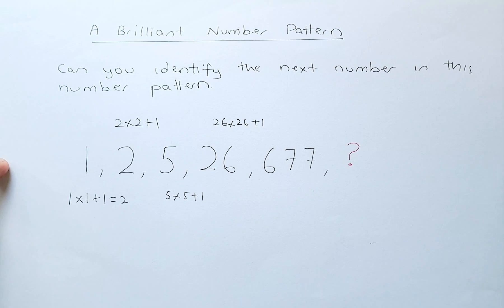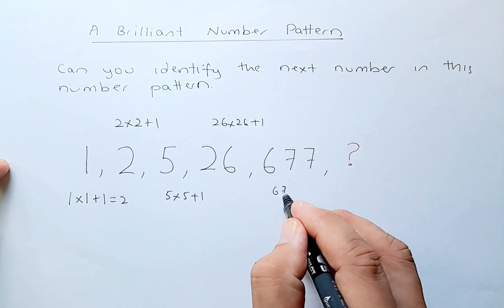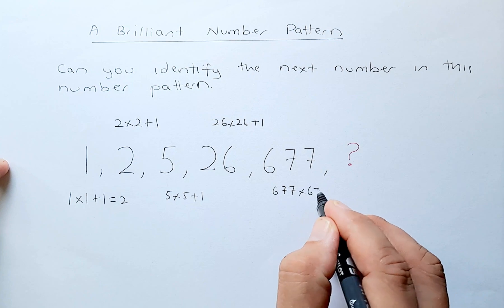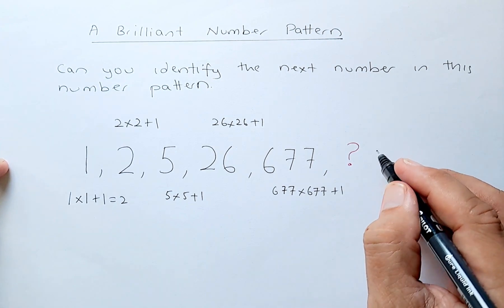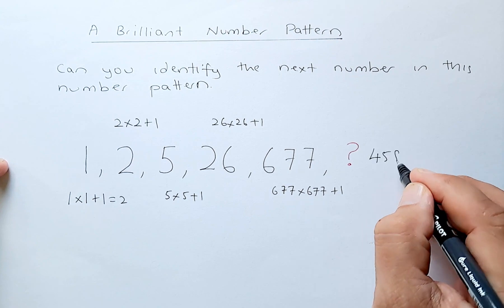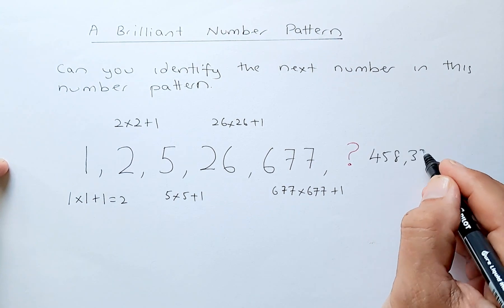And last but not least, 677 multiplied by 677 plus 1, and the answer is going to be a staggering number: 458,330.